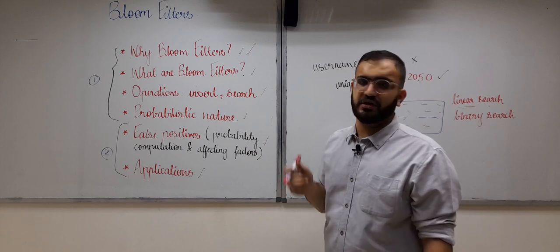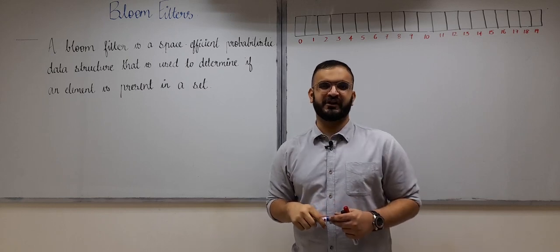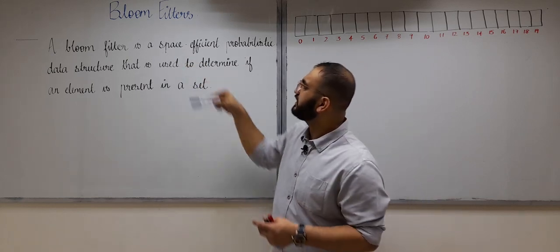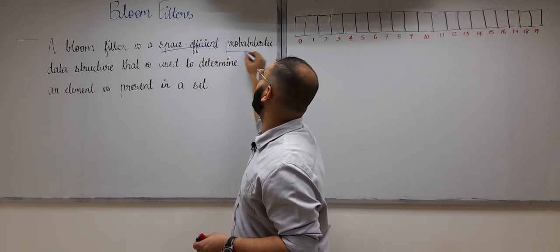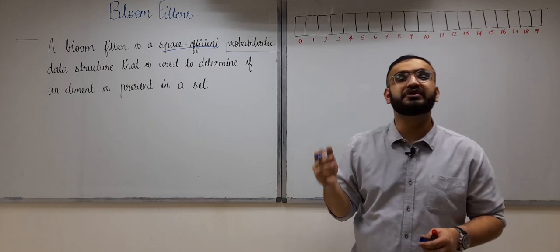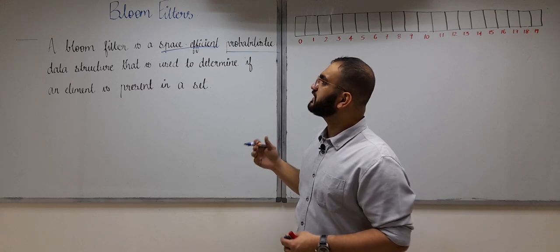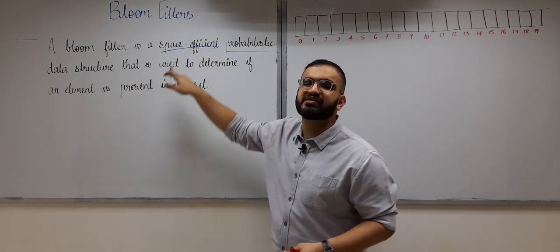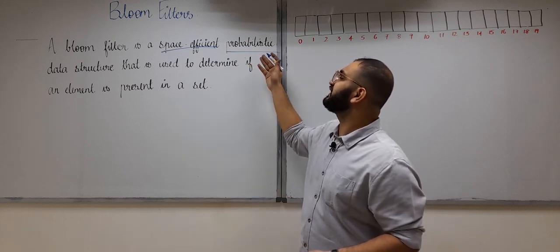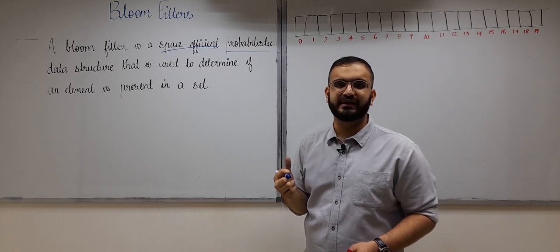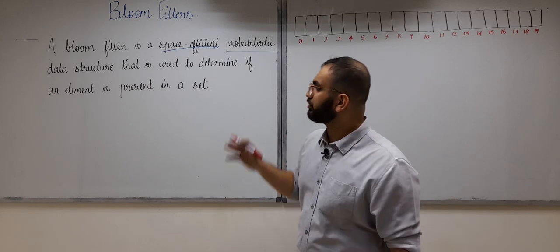That is why we need bloom filters — to perform search operations in a time and space efficient manner. A bloom filter is a space-efficient probabilistic data structure used to determine whether an element is present in a set or not. We will learn why it is called space-efficient and why it is probabilistic.